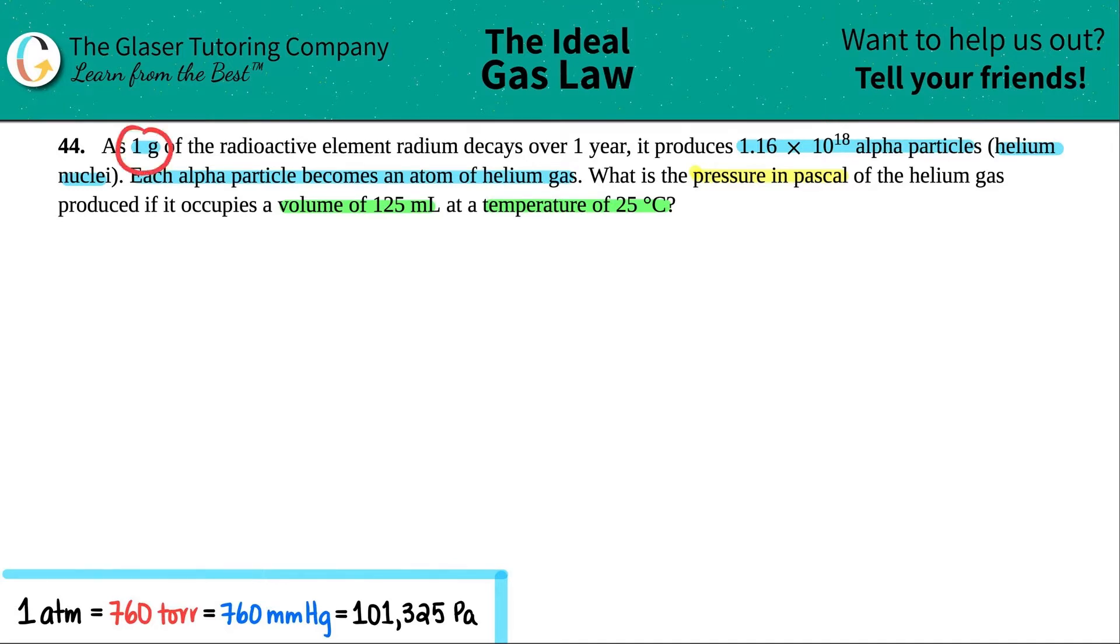Now they said that we had one gram of this radioactive element radium, and it's decaying over a year. So we have radium, we have a gram of it, and it's decomposing. And because of that decomposition, it's going to produce 1.16 times 10 to the 18th alpha particles. And each one of those alpha particles becomes an atom of helium gas. And remember, with this chapter, we only care about gases. Chances are this one gram of the radioactive element wasn't a gas.